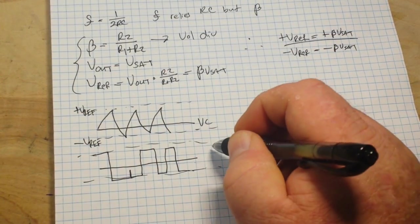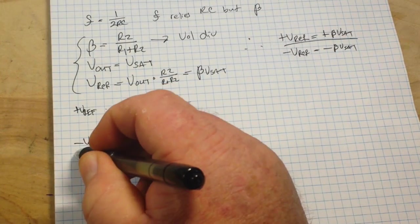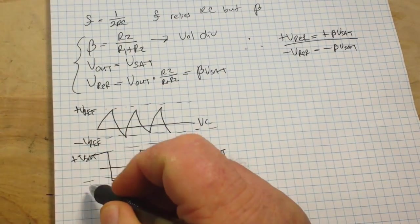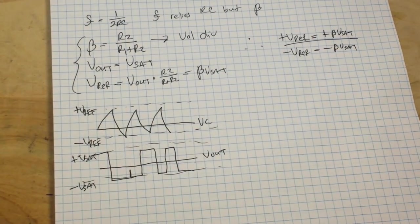This is our Vout. So this is positive Vsat, and this is negative Vsat. Okay?